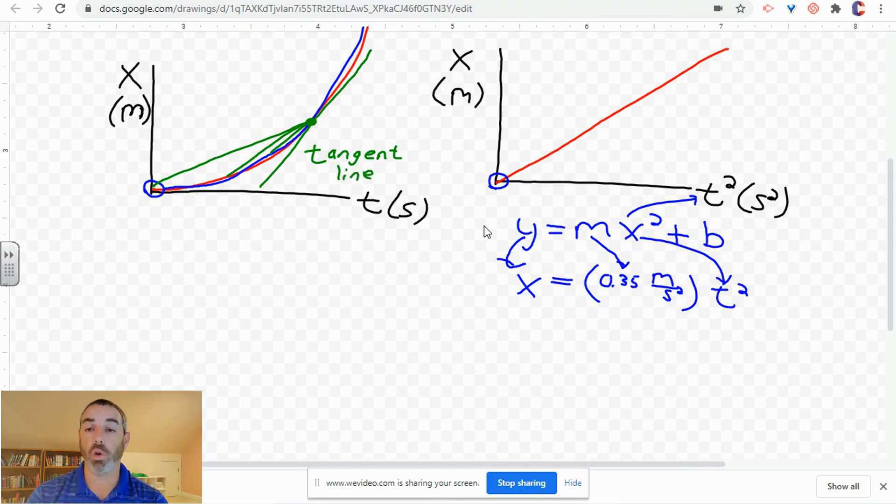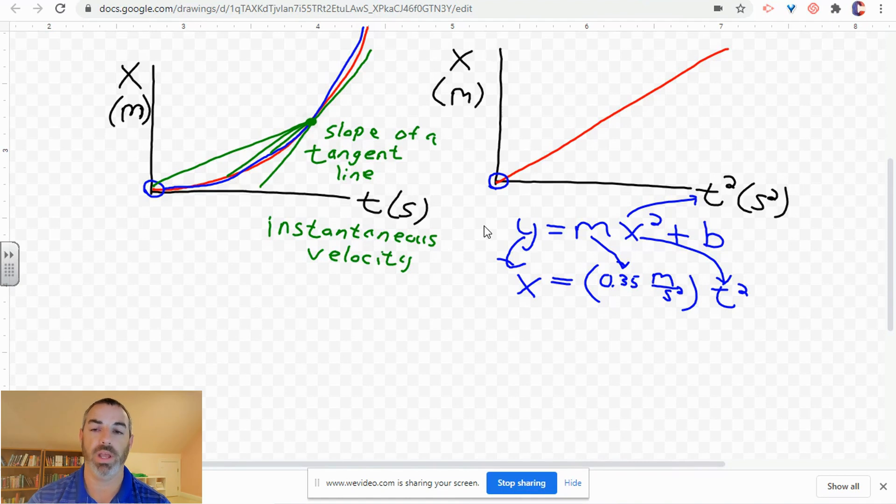The slope of that tangent line represents the velocity right at that point because slope on a position time graph represents the velocity. In this case, the velocity right at that point, that is called the instantaneous velocity. That's how fast it's moving at that instant in time or that moment in time. So, the instantaneous velocity is determined by the slope of a tangent line.